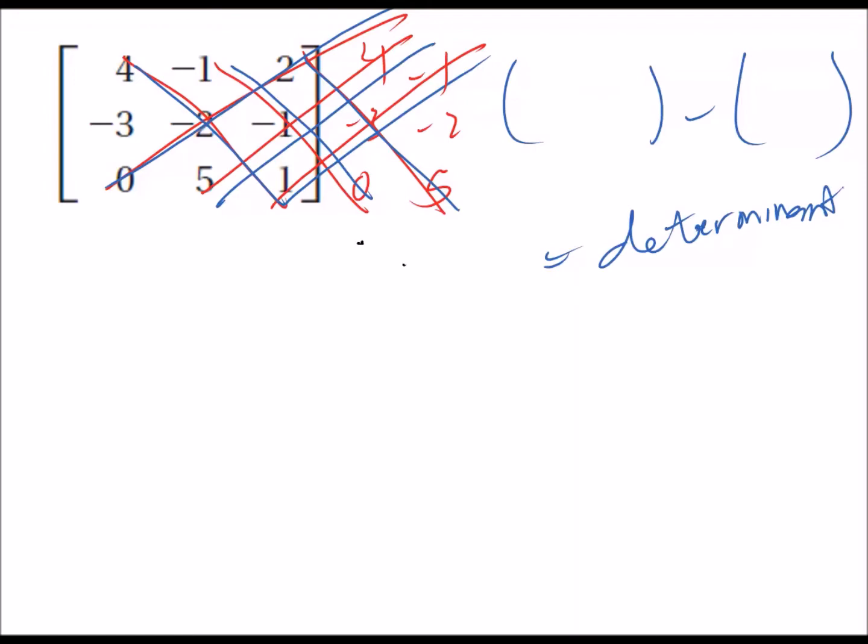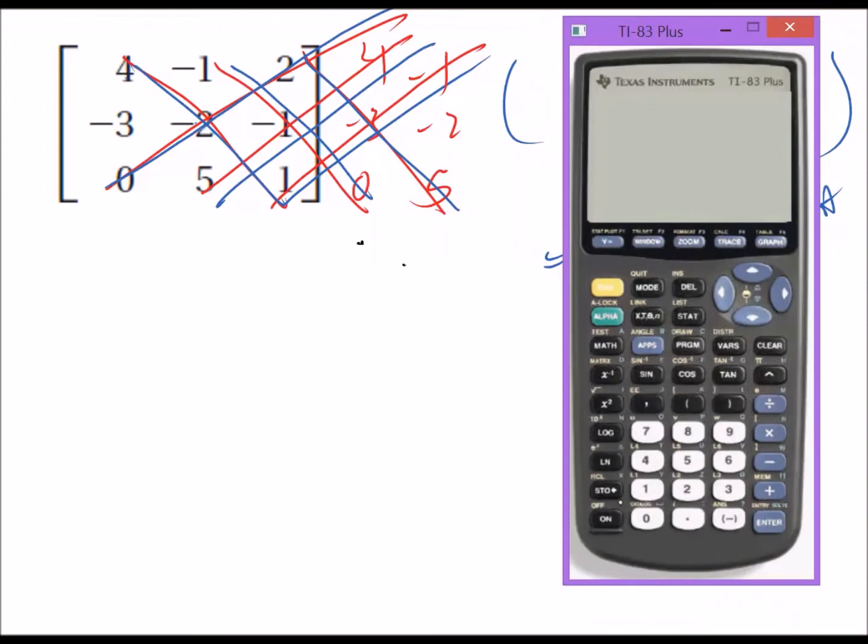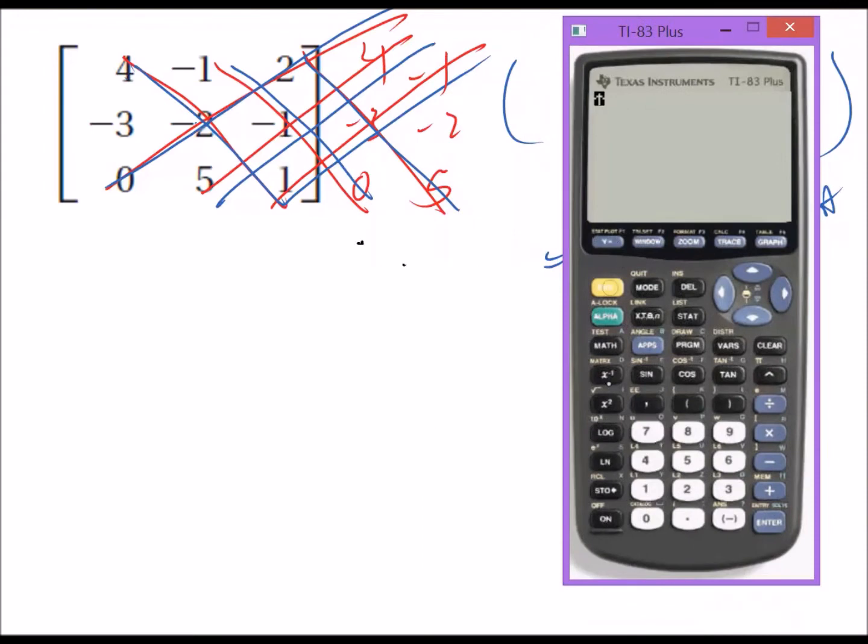However, I don't think it's necessary to walk through those steps. I'm just going to show you how to use a calculator to make it easier. From the last lesson you know how to enter a matrix. Go to second, matrix, edit matrix A. This matrix has three rows and three columns. Enter those numbers: 4, -1, 2, -3, -2, 0, -1, 5, 1.